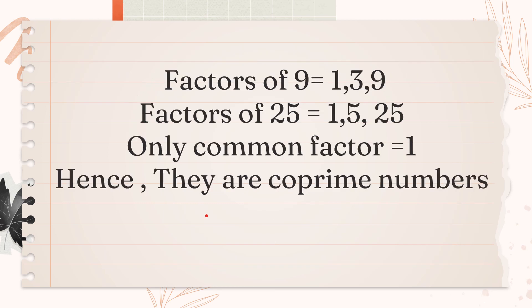Another example, 9 and 25. Factors of 9 are 1, 3, and 9. Factors of 25 are 1, 5, and 25. So the common factor here again is 1. Because they have only one common factor which is 1, therefore they are called co-prime numbers.